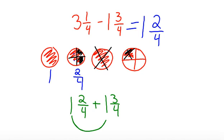So, start by adding your whole numbers, and you get 1 plus 1, which is 2. And then, if you add your numerators, you get 2 and 5/4.